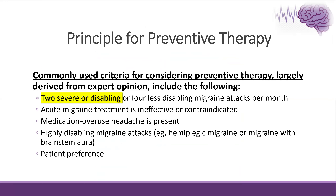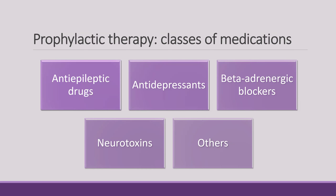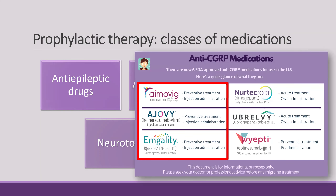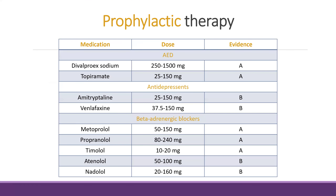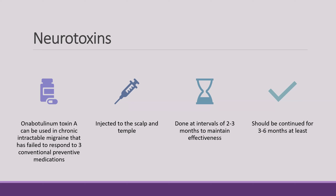Preventive therapy is considered when there are two severe or disabling or four less-disabling migraine attacks per month, when acute migraine treatment is ineffective or contraindicated, in the presence of medication overuse headache, for highly disabling migraine, or per patient preference. Options for preventive therapy include beta blockers, antidepressants, anti-emetics, neurotoxin, and anti-CGRP injections and oral medications. Specific agents include valproic acid, topiramate, amitriptyline, and propranolol. Botox provides relief for up to three to six months and should be repeated after that.